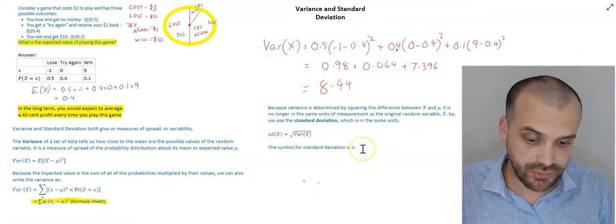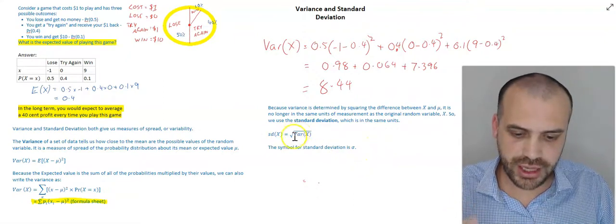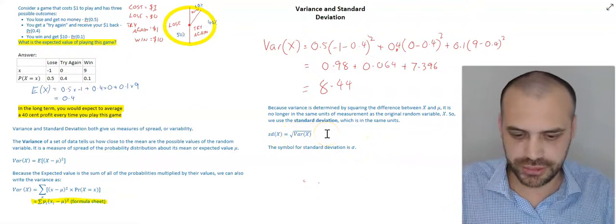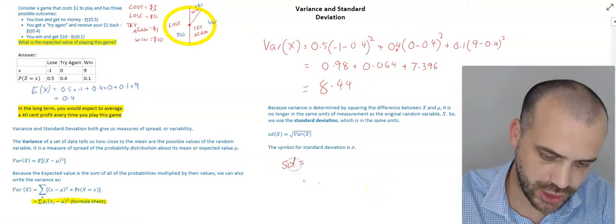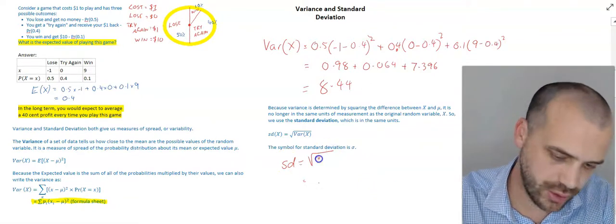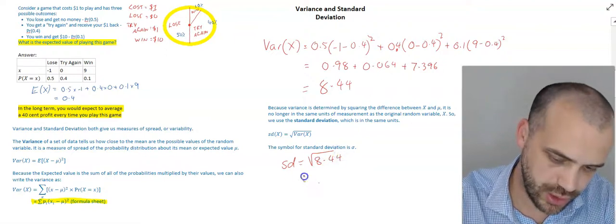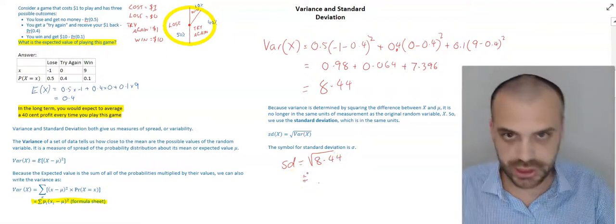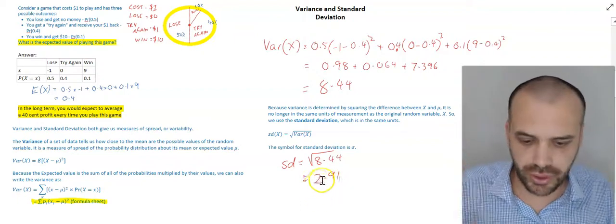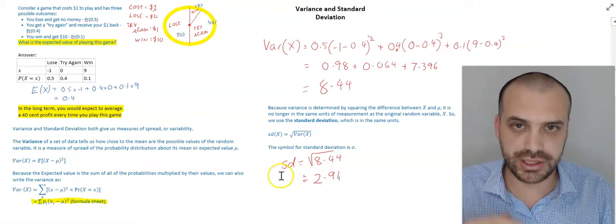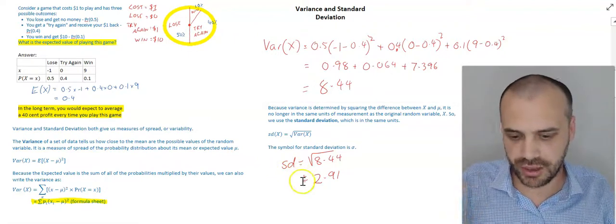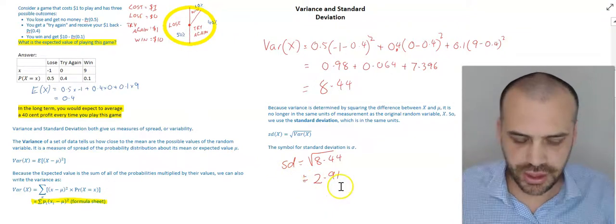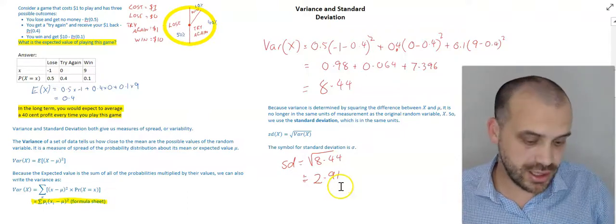Finding our standard deviation is very straightforward. We just take our variance and square root it. So, in this particular question, the standard deviation will be equal to the square root of 8.44. And, obviously, we can just calculate that. We get an answer of 2.91. And that is our standard deviation, how spread out around the mean our values will be. That's the variance and the standard deviation.